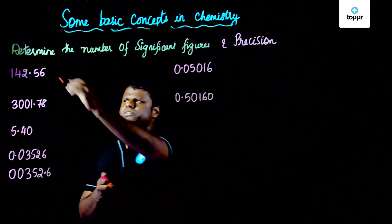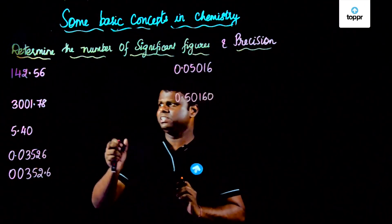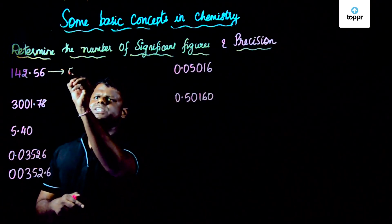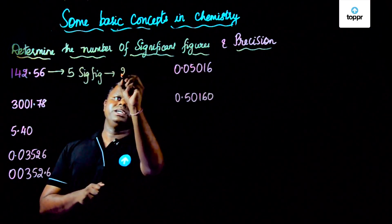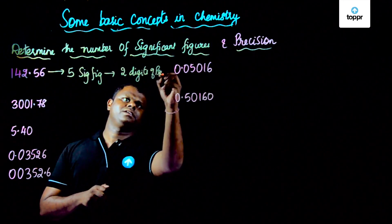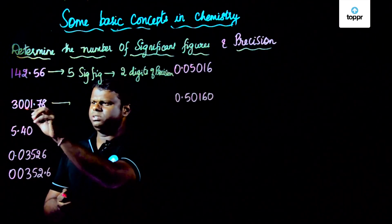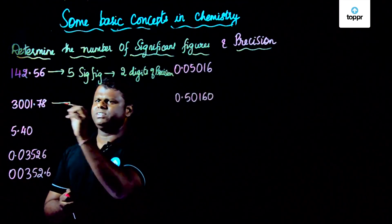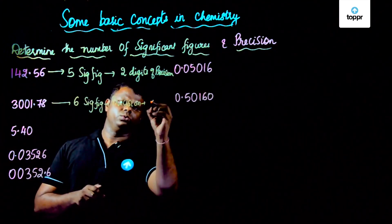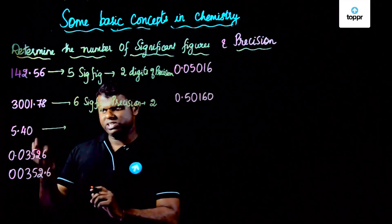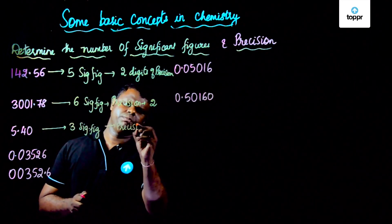Now let's do a small exercise on significant figures — determine the number of significant figures and precision. As per the rules, these are all non-zero digits, so this has five significant figures and after the decimal there are two digits, so precision is two decimal places. In the next case, the zeros are enclosed between two non-zero digits, so you have 1, 2, 3, 4, 5, 6 — six significant figures and precision is two. The terminal zero here is significant, so this has three significant figures and precision is two.